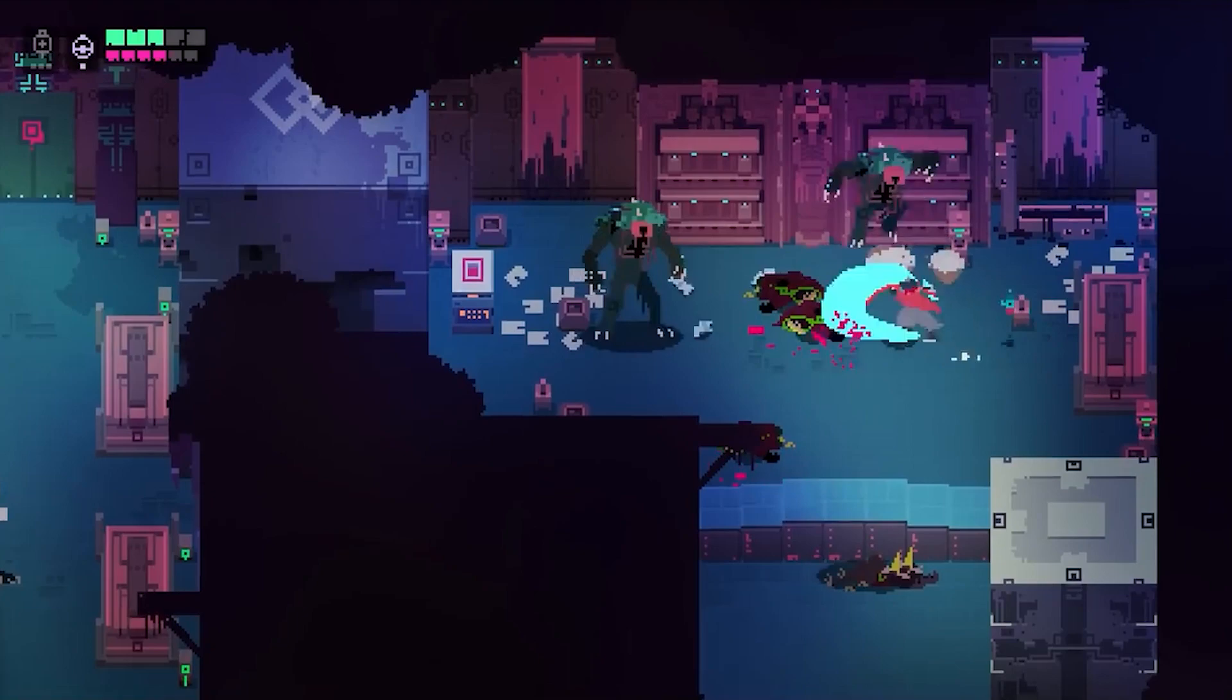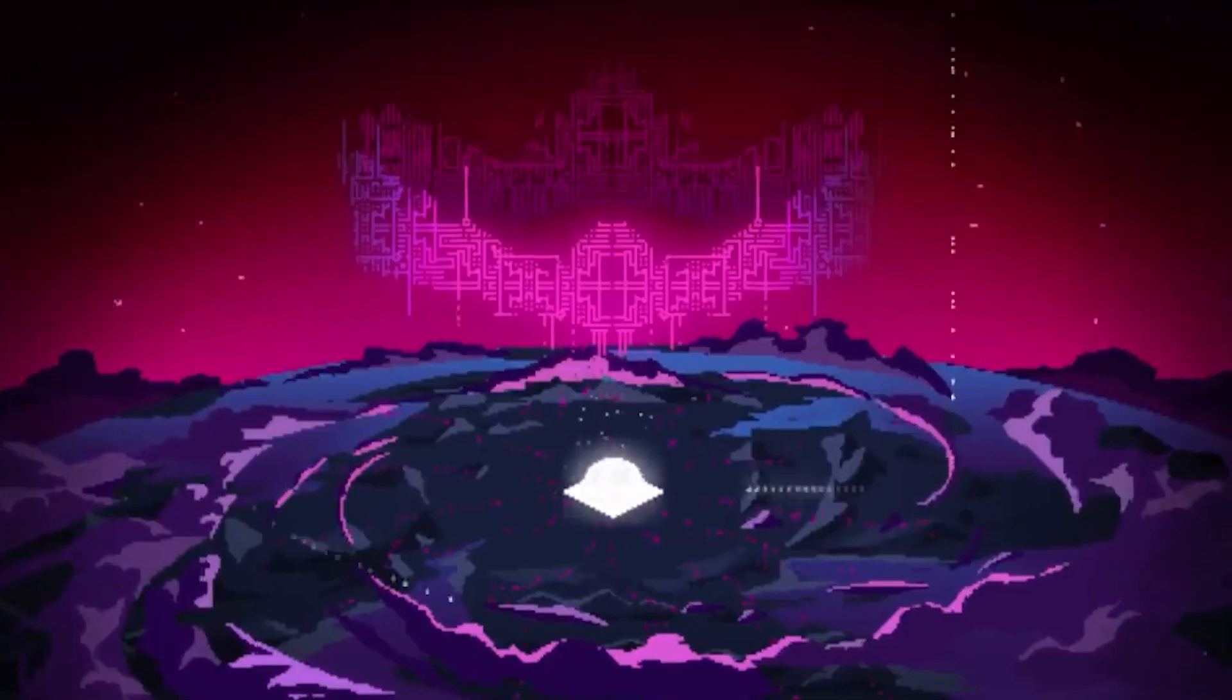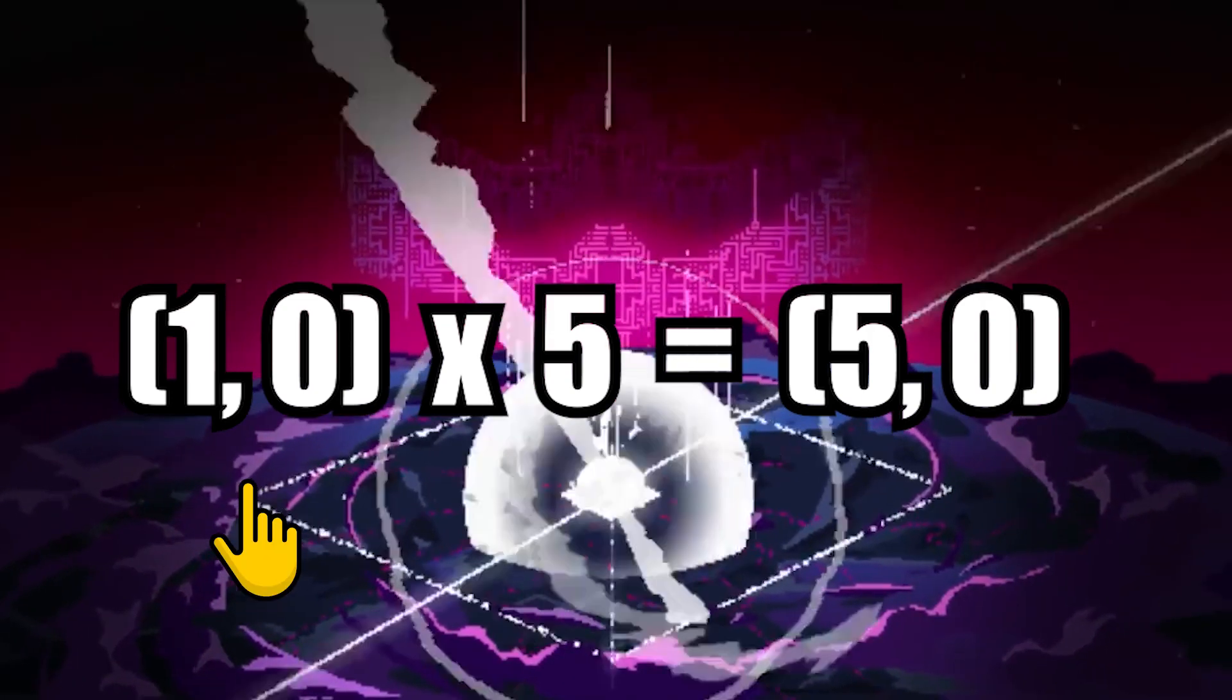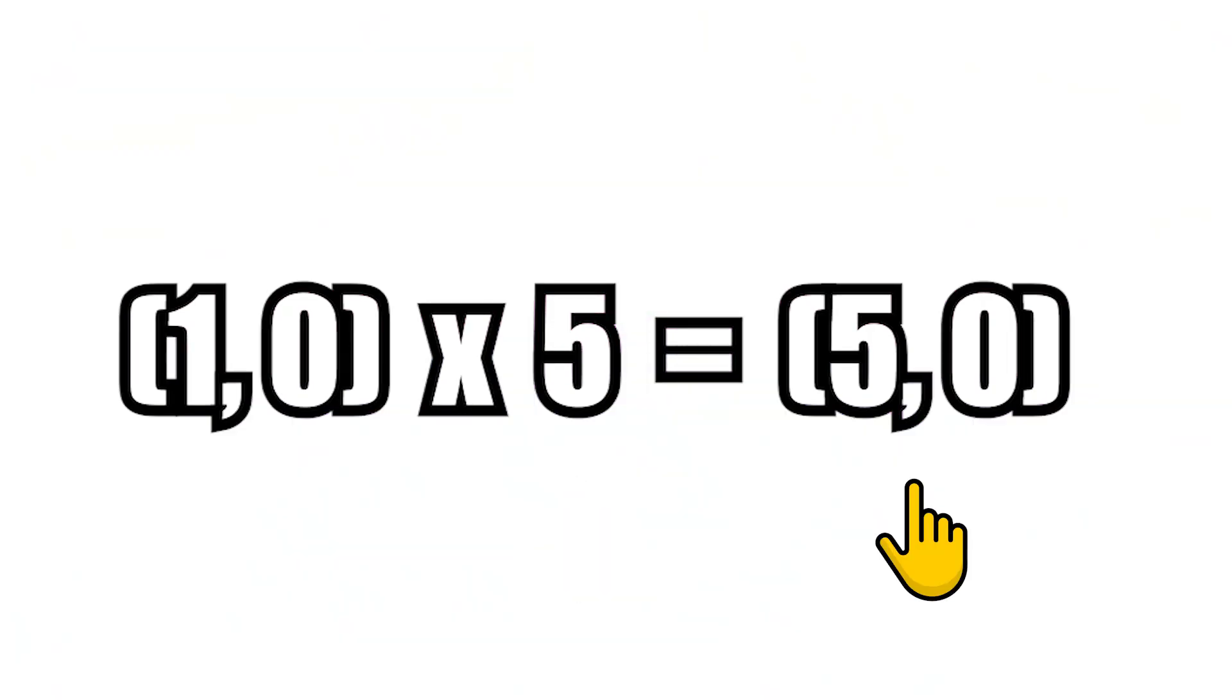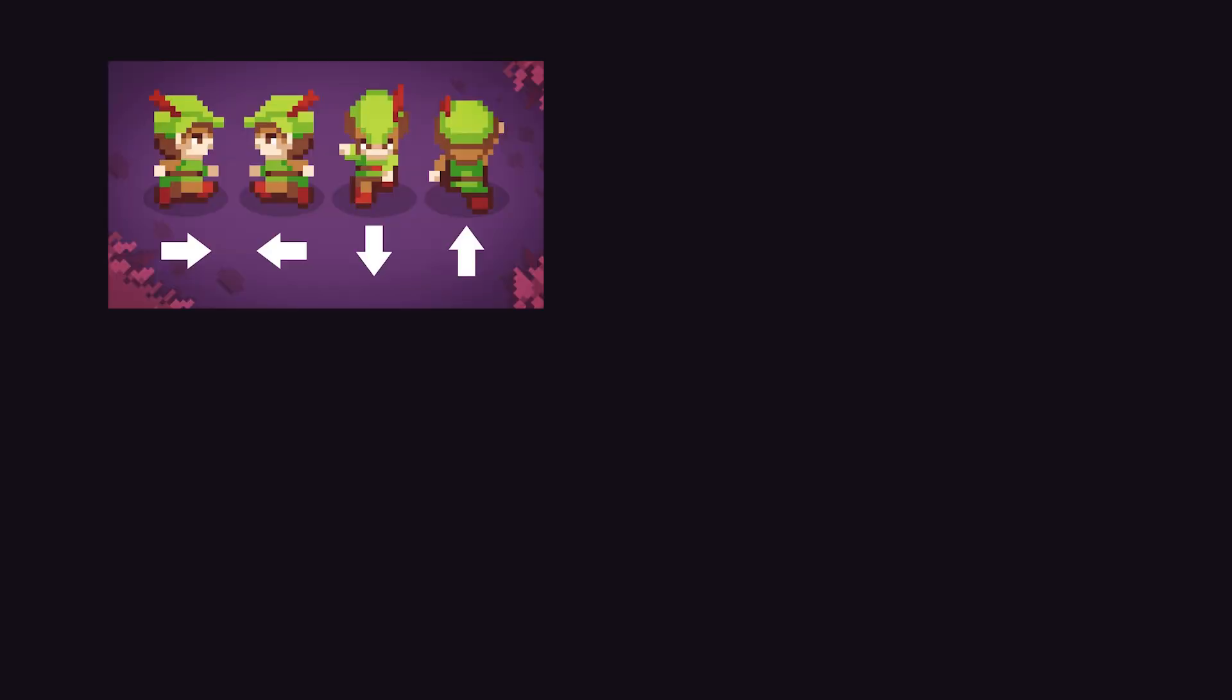Now we have the correct diagonal vector, but what if you wanted the speed to be greater than 1? In this case, all you have to do is multiply the vector by whatever your speed is. Now the vector will be scaled to the speed that you set, and that is essentially how 2D movement works.